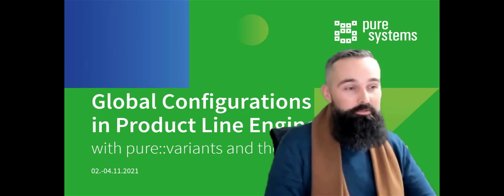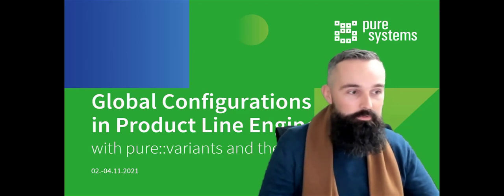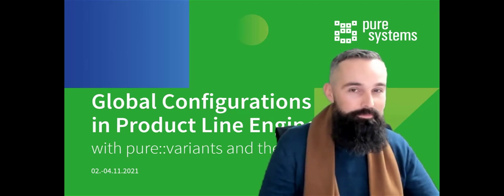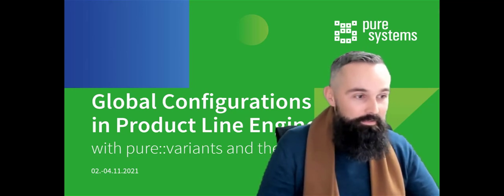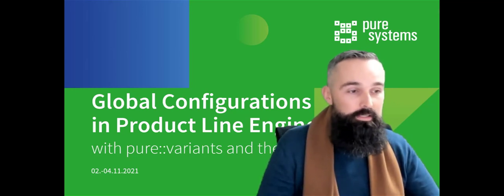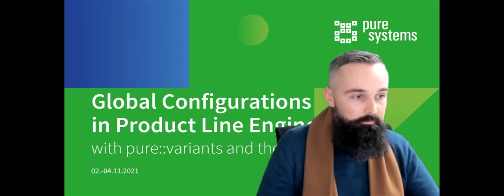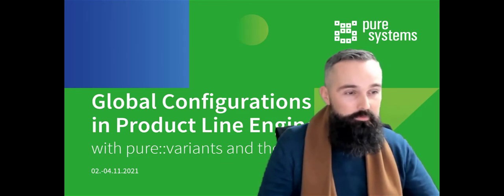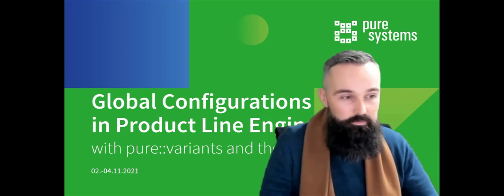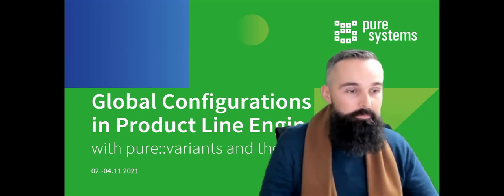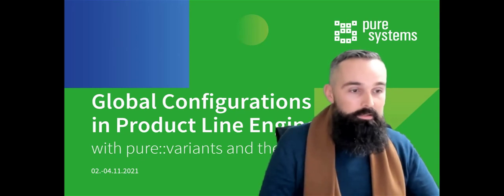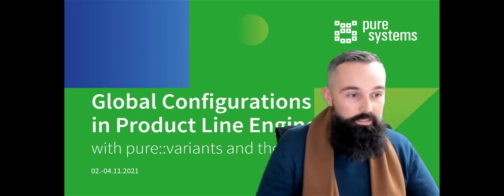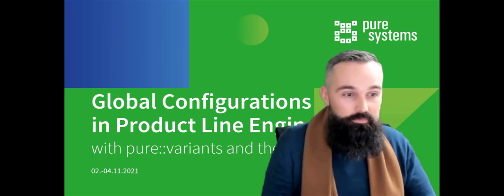Before we get into the actual topic, I want to briefly introduce you to the company Pure Systems that I'm working for and that develops and distributes Pure Variants. Next, I will give you a brief explanation of product line engineering in general. Prepared with that knowledge, we will have a look at the synergies between global configurations and the OSLC concept and product line engineering as a standard for systematic reuse of engineering assets, and work out the advantages for companies that are developing product families of complex systems.